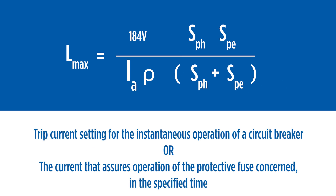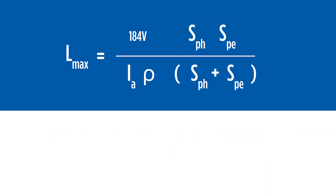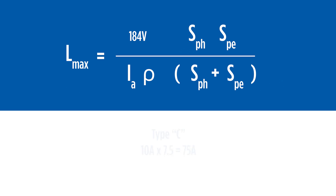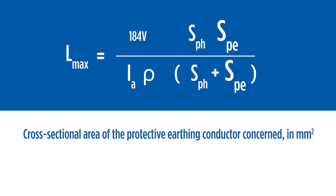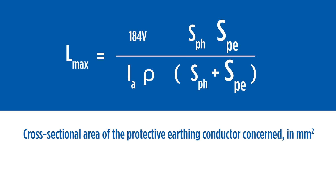IA represents the protection device's current value for instantaneous tripping. For example, a 10-amp C-type circuit breaker requires seven and a half times its rated value for instantaneous tripping. The final consideration is the cross-sectional area in millimetre squared of the phase and protective earth conductors.